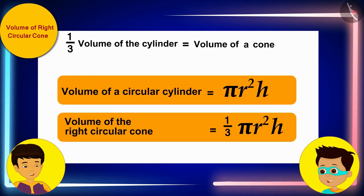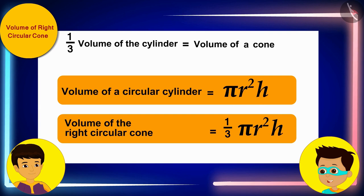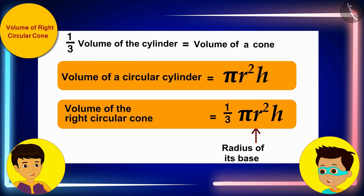Therefore, we can write the volume of the right circular cone as one-third of the cylinder, where r is the radius of the base of the cone and h is its height.